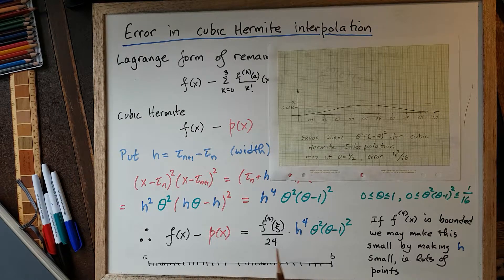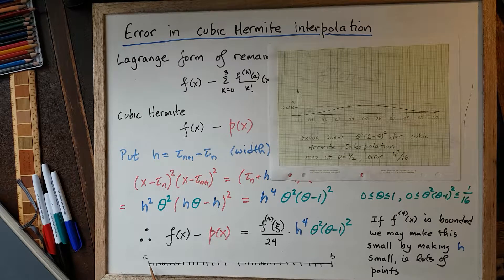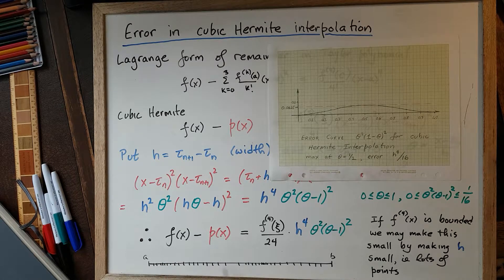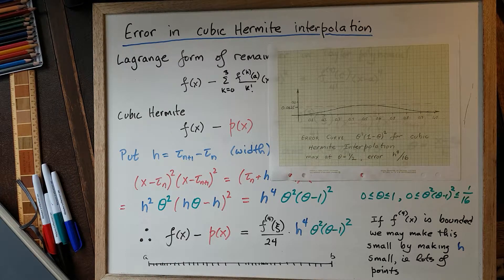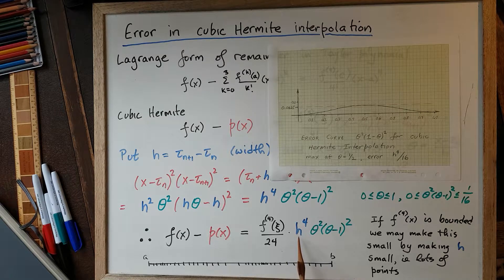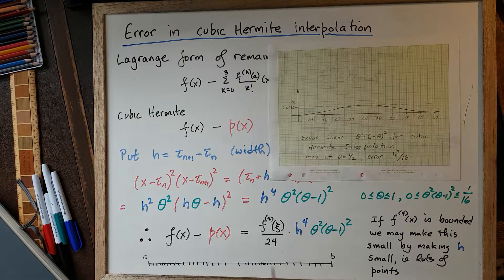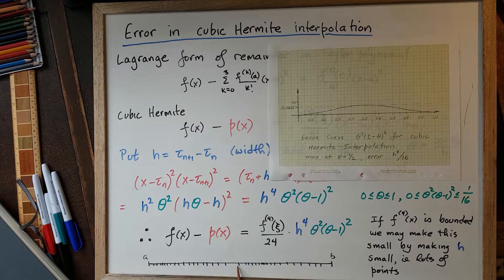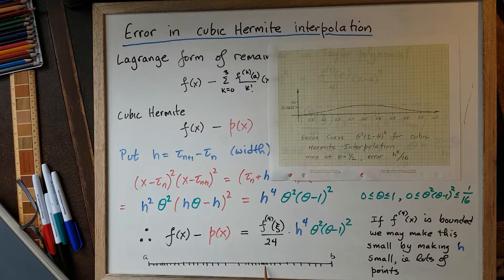And that's essentially saying that we can take enough subintervals on the interval a to b that we can make h to the power of 4 small in every interval. They don't have to be equally spaced. You can have wider ones or smaller ones. And you might want to do that if in this interval, for example, the 4th derivative isn't varying so much.